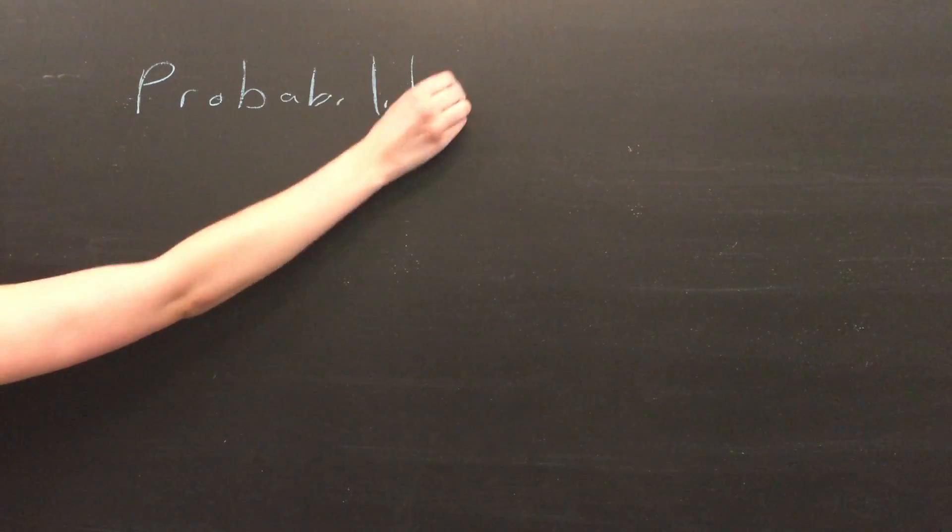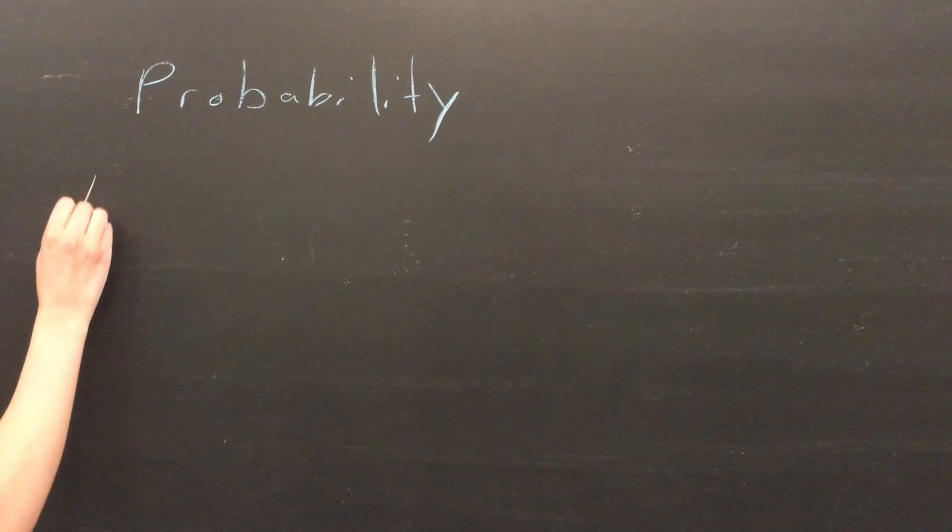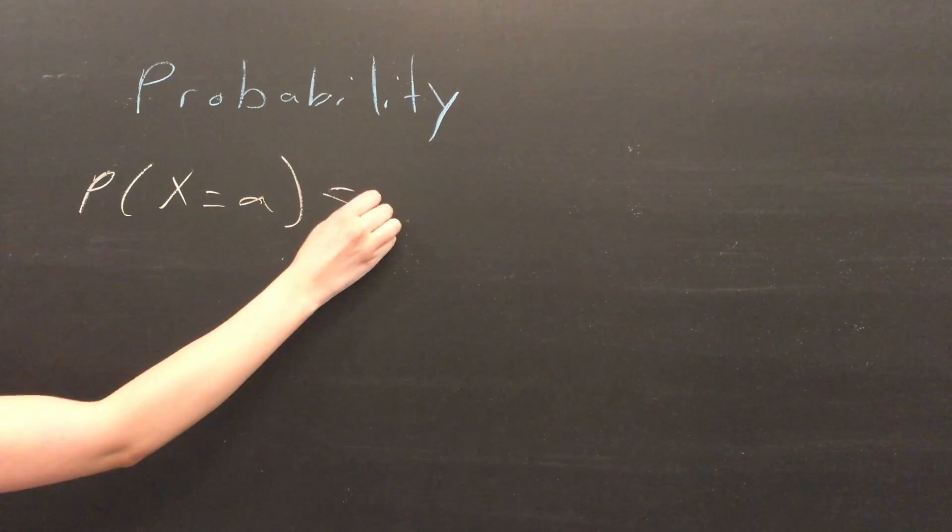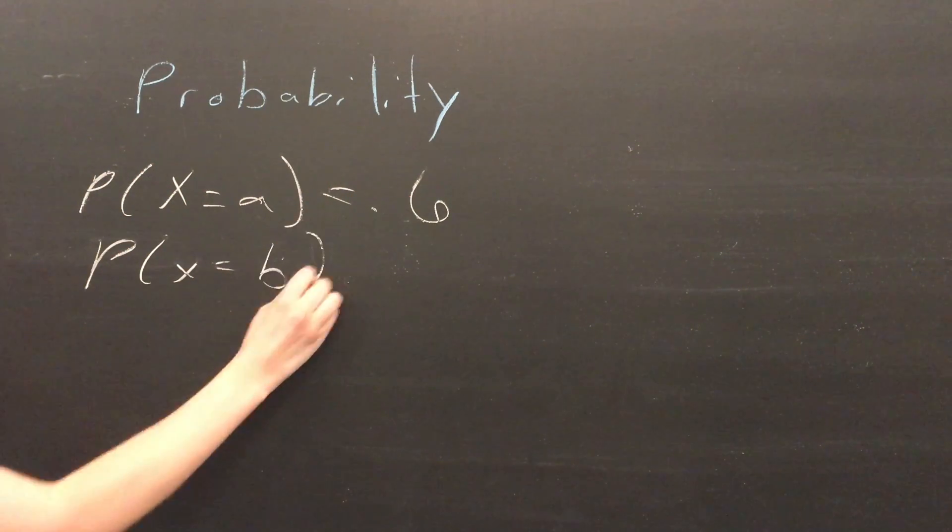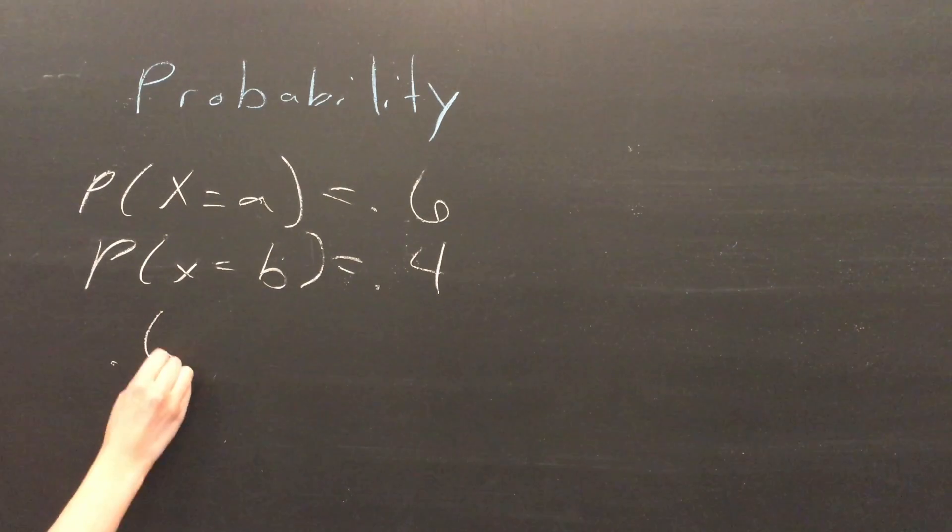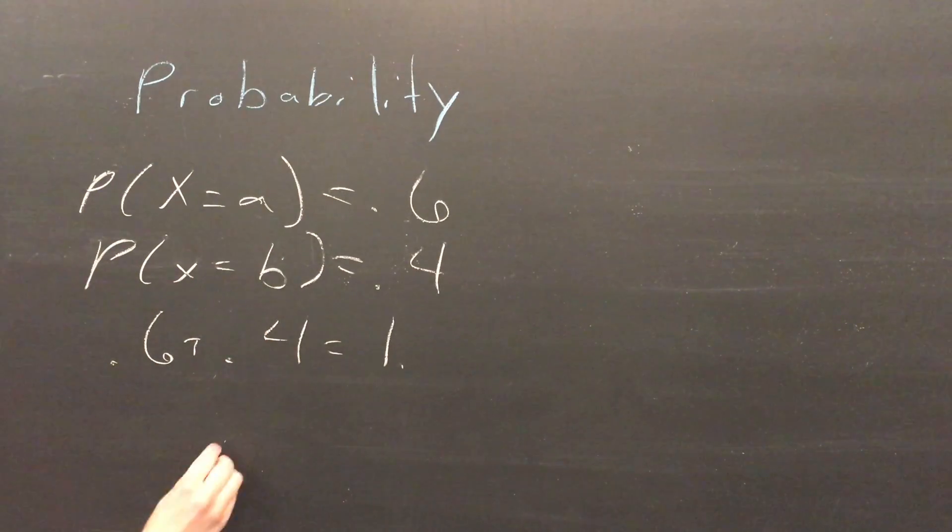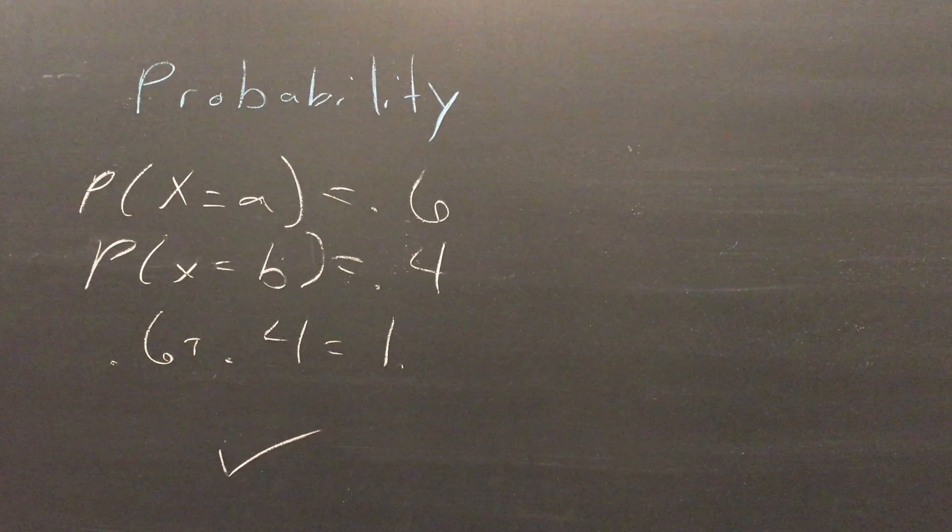I'm going to start off by going over the basics of probability in mathematics. A probability function is a function that accepts as input a variable with a specific value and outputs the probability of the variable having that value. As a rule, all the probabilities in a given probability function must sum to one in order for the function to be well defined.